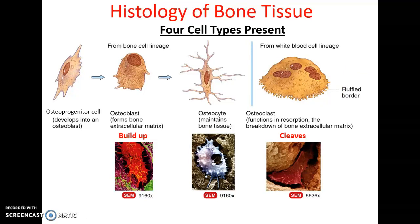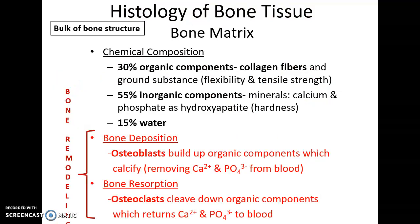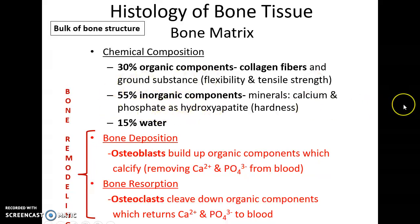So osteoprogenitor cells become osteoblasts, and osteoblasts become osteocytes. Another important cell is the osteoclast, which functions in resorption — breaking down the organic material and thereby releasing stored minerals. The bone matrix is about 30% organic components, including ground substance and collagen fibers, giving bone flexibility and tensile strength. About 65% is inorganic minerals — primarily calcium and phosphate in the form of hydroxyapatite — giving bone its hardness. In a living bone, about 15% is water.